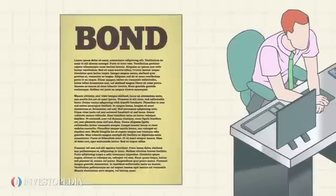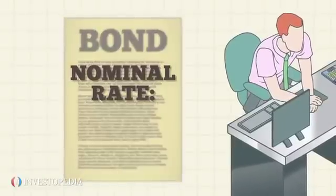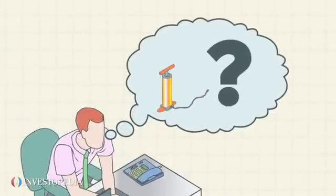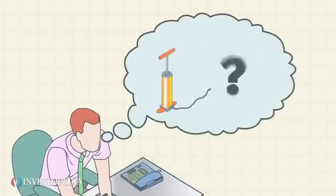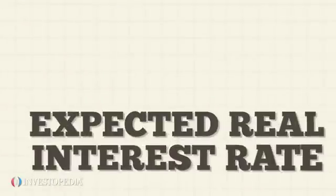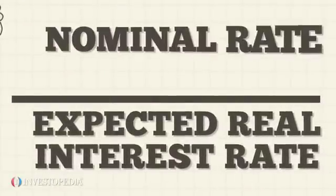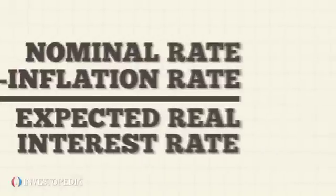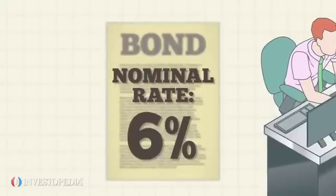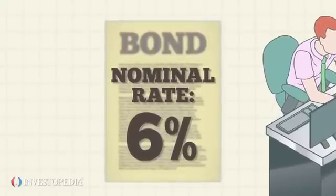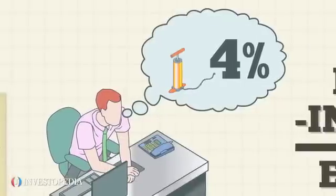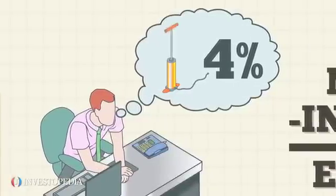Take a one-year bond that offers a nominal interest rate of 6% annually. The lender doesn't know exactly what the inflation rate will be, but figures that it will be close to 4% over the upcoming year. The expected real interest rate is the nominal rate minus the inflation rate. We're left with a real interest rate of 2%. While 6% may sound like a good return, the investment pays far less when you consider that the funds could be worth 4% less the following year.